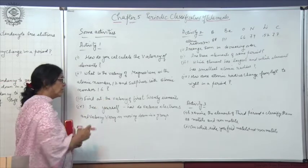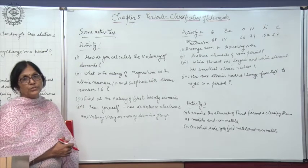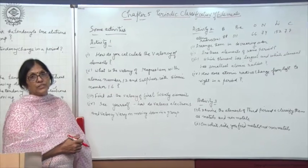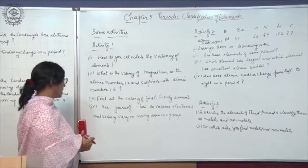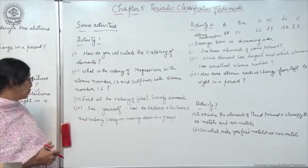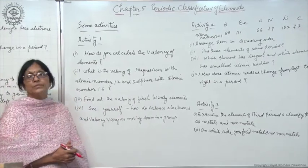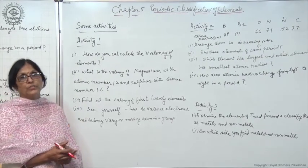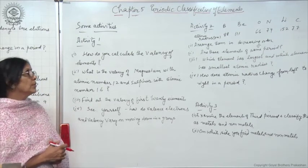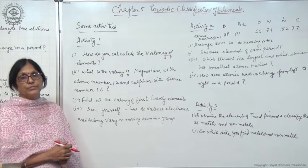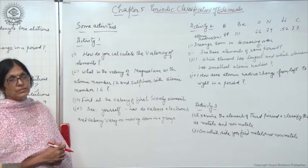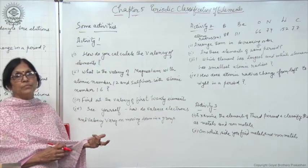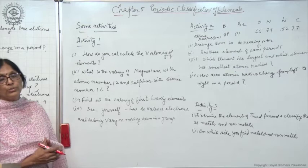The valency of sulphur is also 2. Its electronic configuration is 2,8,6, and its valency is 8 minus 6, equal to 2, found by subtracting the valency electrons from 8. You should write the first 20 elements, write their electronic configurations, valency electrons, and valency, then observe how valency electrons and valency vary on moving down a group and left to right in a period. This way you need not memorize — you will understand clearly.